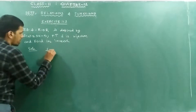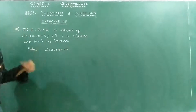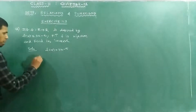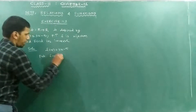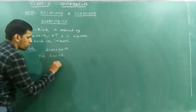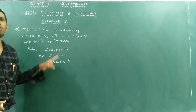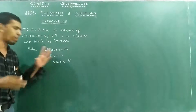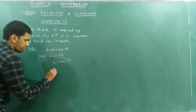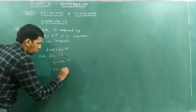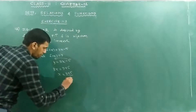Let's see f of x. Put f of x equal to y. So y equal to 3x minus 5. Now find the value of x in terms of y. x is equal to y plus 5 divided by 3.